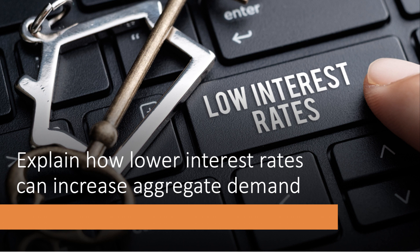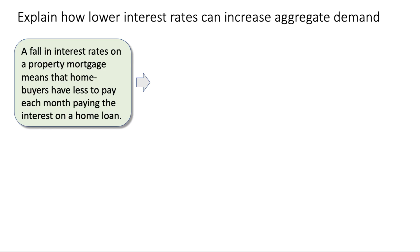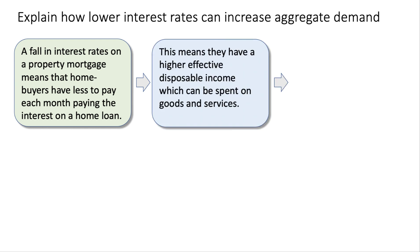Let's take the example of a fall in the interest rate on a mortgage. That means that home buyers have less to pay when they're servicing their loans, and if the mortgage payments go down this means they have a higher effective disposable income, which can then be spent on goods and services.